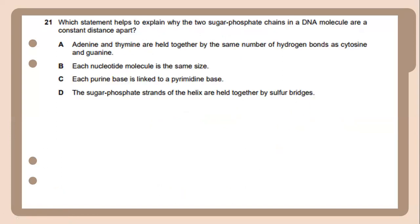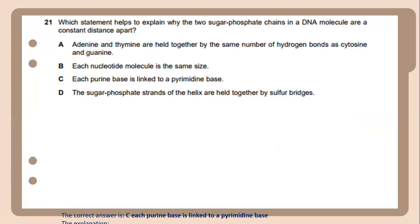Which statement helps to explain why the two sugar-phosphate chains in a DNA molecule are a constant distance apart? The answer is C, each purine base is linked to a pyrimidine base. This can be explained by a purine, which is larger, always paired with a pyrimidine, which is smaller, keeping the distance between the two sugar-phosphate chains constant.